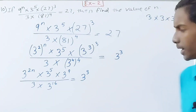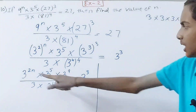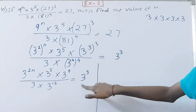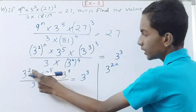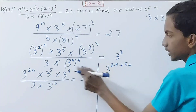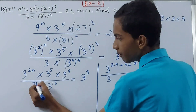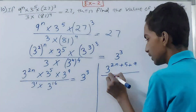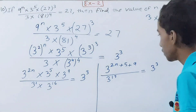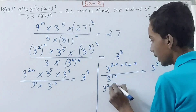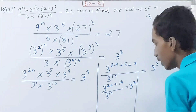Next step: since multiplication is there, we add the exponents. So numerator becomes 3 to the power 2n plus 5 plus 9. In the denominator, the lone 3 has exponent 1, so we get 16 plus 1 equals 17 — that is 3 to power 17. So we have 3 to power 2n plus 14 upon 3 to power 17, equal to 3 cubed.